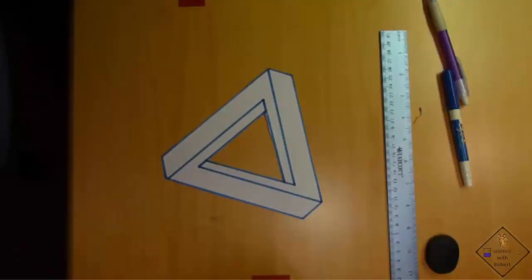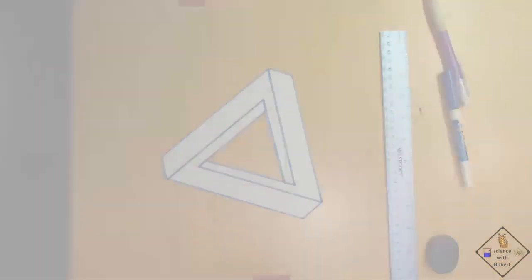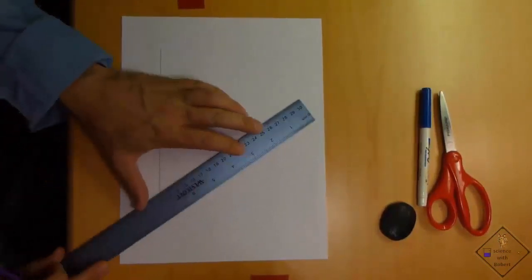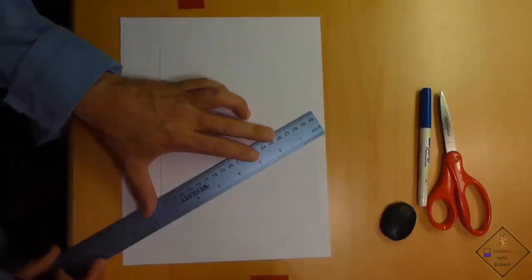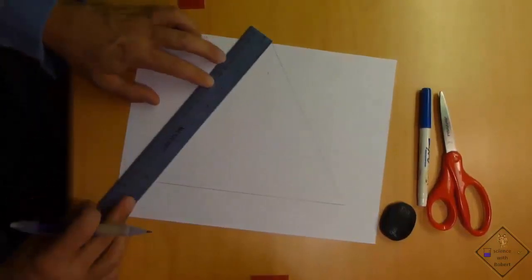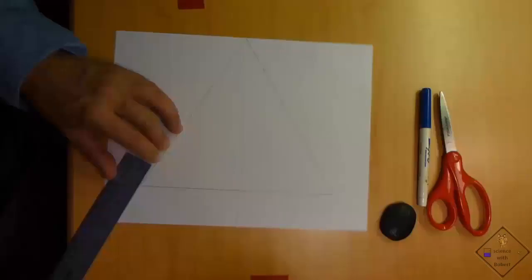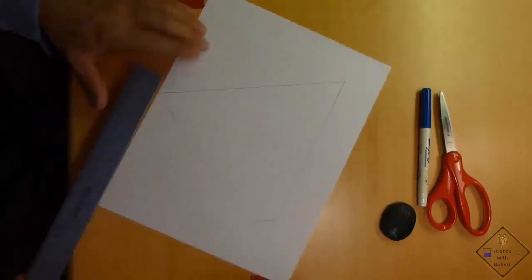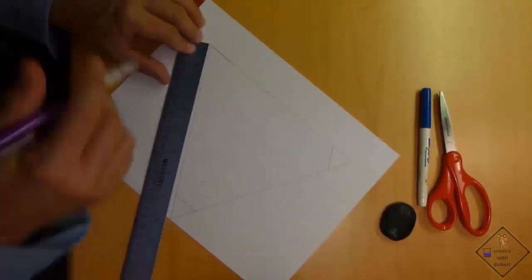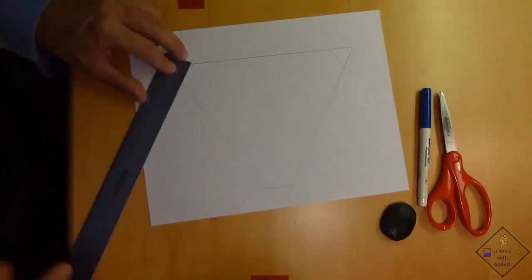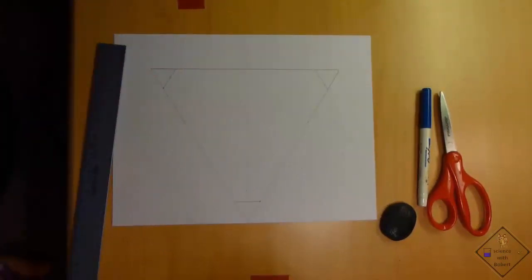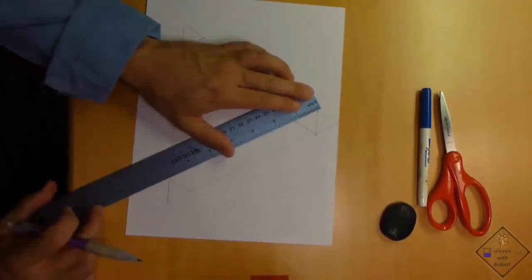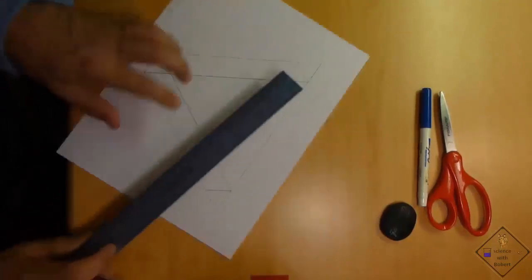This is what it is going to look like when you're all done. The first thing you have to do is draw a large equilateral triangle, or a triangle with all three sides the same length. Next, draw small equilateral triangles at each corner.